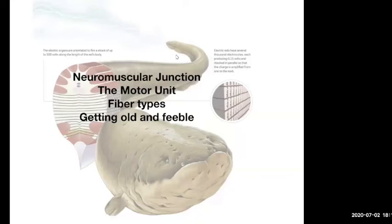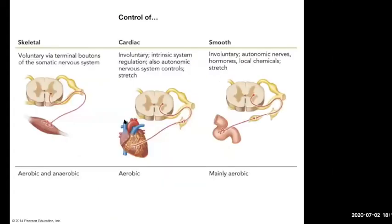What we're going over today — hopefully you guys watched the sarcomere, the sliding filament theory and stuff like that, because this is leading up to that and a little bit surrounding that whole thing. So we'll talk about the neuromuscular junction, the concept of a motor unit, a little bit about the fiber types, and maybe if we have time, we'll talk about skeletal muscle aging.